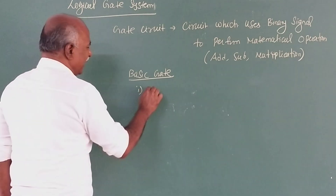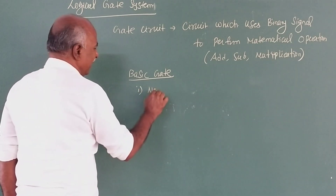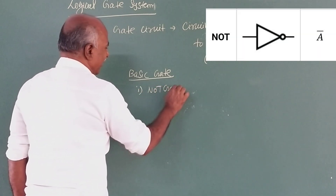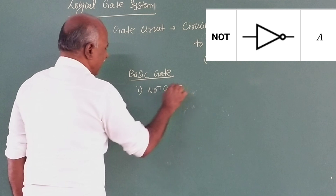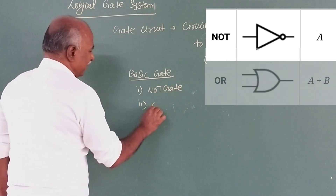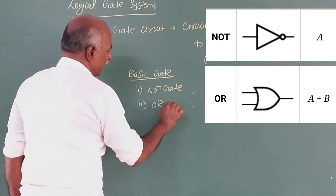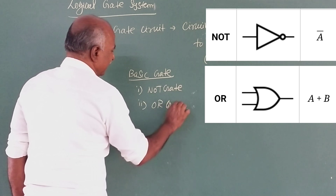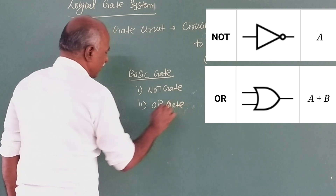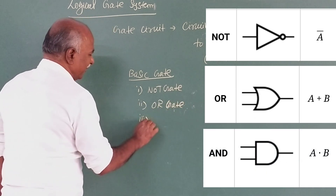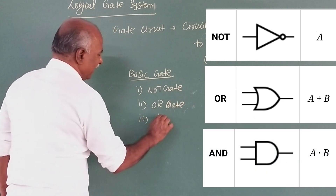Three gates are the basic gates. One is the NOT gate, another one is the OR gate, and another one is the AND gate. These are the basic gates — NOT gate, OR gate, AND gate.